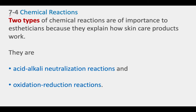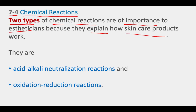Now we look at section 7.4 on chemical reactions. There are two types of chemical reactions that are of importance to an esthetician, and the reason for that is because they explain how skincare products work. In fact, skincare product lines and their uses are based on these two types of chemical reactions.